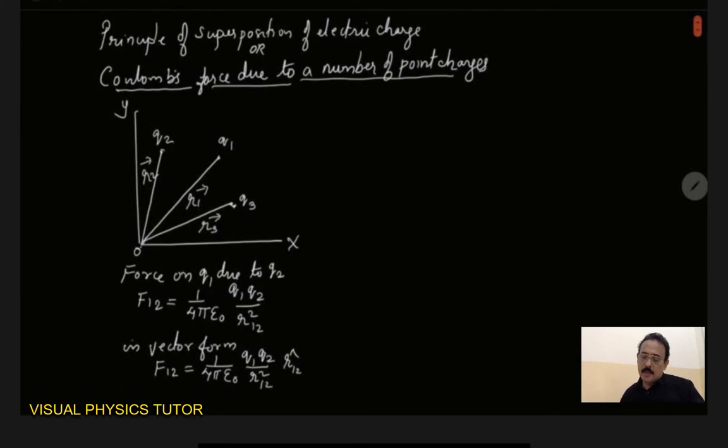So we can see that now here the q2 exerts a force on q1. So what will be the direction of the force? The direction of the force will be this way. Please check the diagram here. It will go this way. So here I can write this is F12.